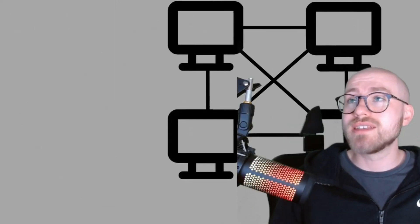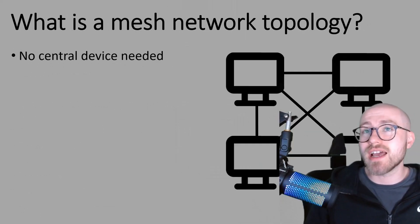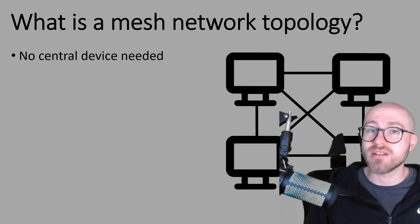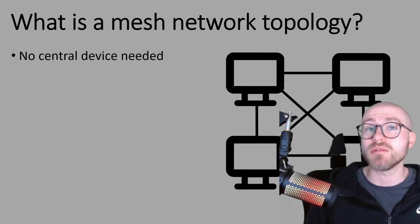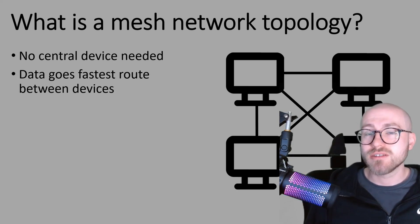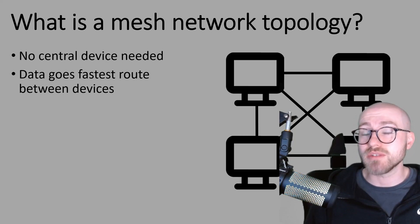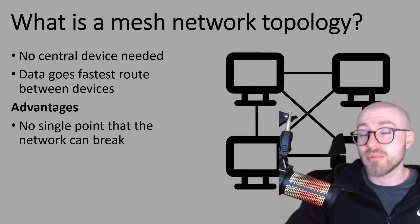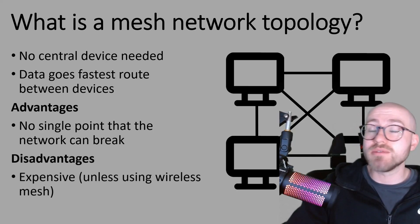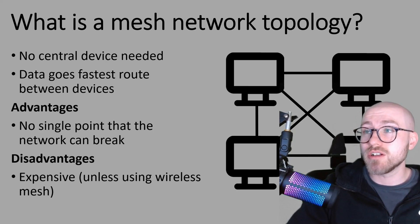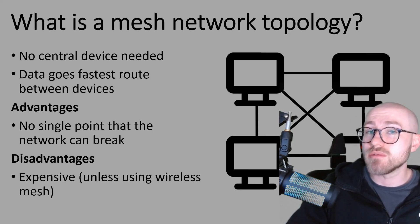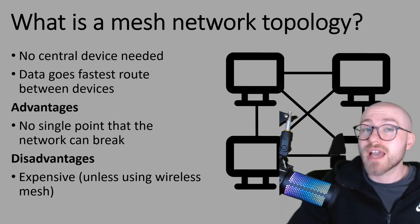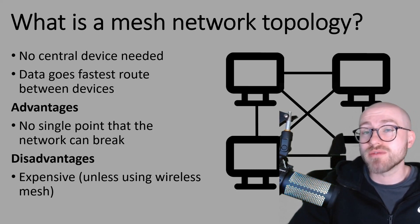The other topology we're going to look at is the mesh network topology. As you can see from the diagram, you don't need a central device, so you already save a bit of cost on network hardware. All of the devices are fully connected — sometimes referred to as a fully connected network — and the data will choose the fastest route between devices. Because it's fully connected there's no single point where the network can break, which is a big advantage. As a disadvantage, because there's so much cabling between all the devices it's very expensive to set up, though you can have a wireless mesh which would save on cabling costs.